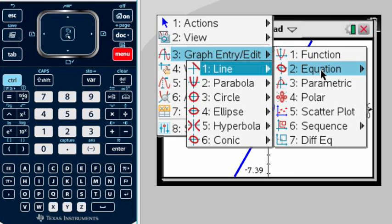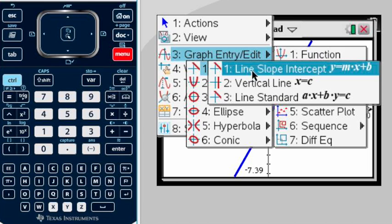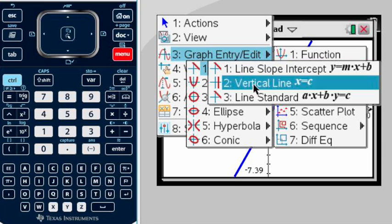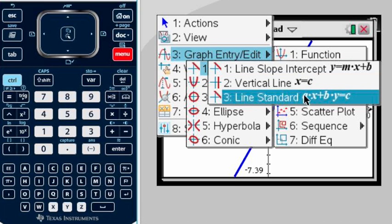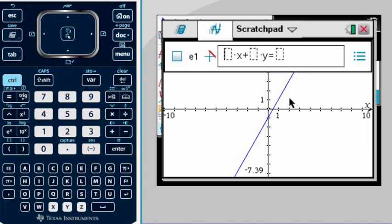All you have to do is press menu, and then you'll notice that option 3 says Graph Entry/Edit. You still have an equation, it's just not in the form of y equals. You're going to select Equation, and in this case we're going to use a Line. The moment you select Line, another menu comes in where you see it's already set up for standard form. We're going to select standard form.